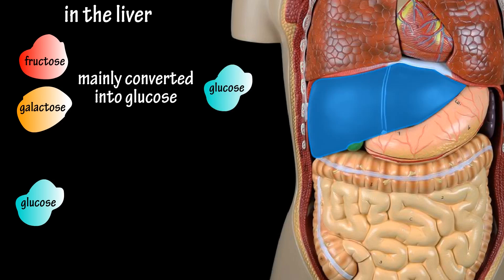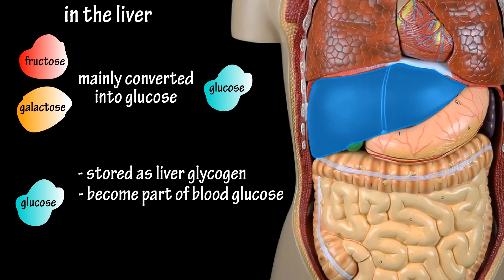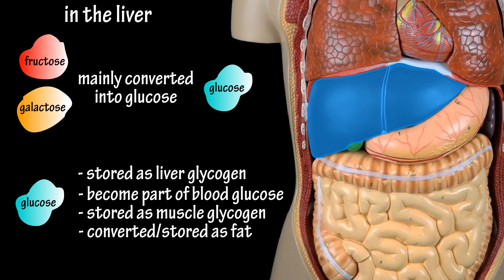In the liver, fructose and galactose are mainly converted into glucose. The actual glucose molecules from food can be taken up by the liver and stored as liver glycogen, or they can become part of blood glucose and be used by cells throughout the body as energy. They can also be taken up by muscle cells and stored as muscle glycogen, or they can be converted into fat and stored in adipose or fat tissue.